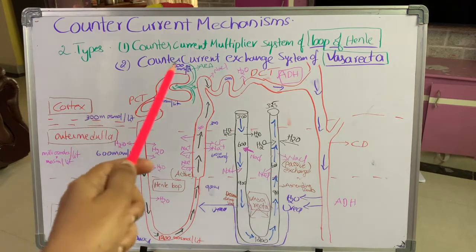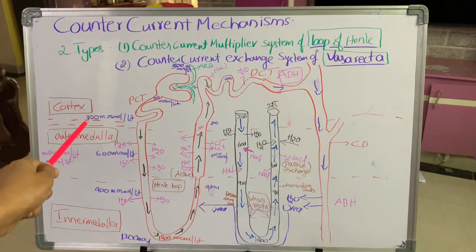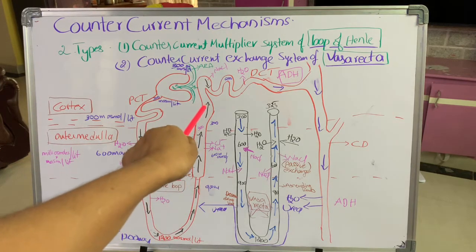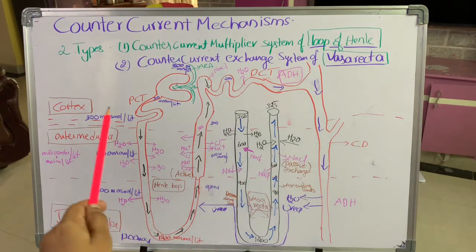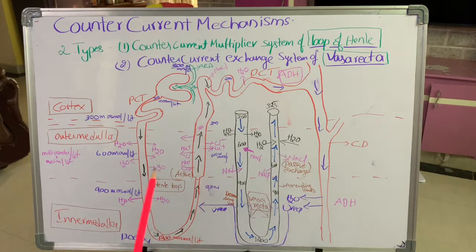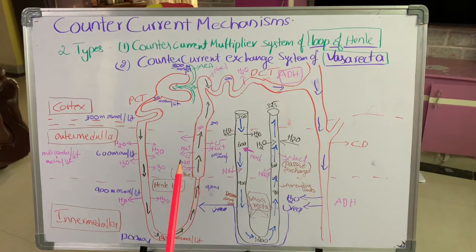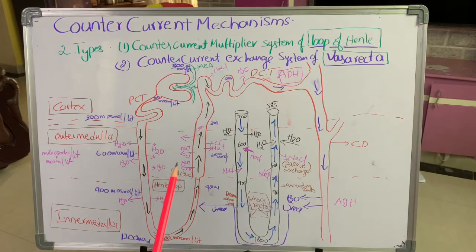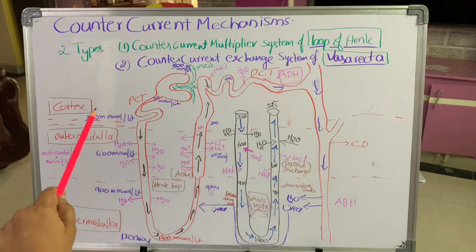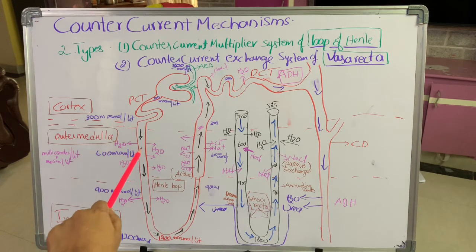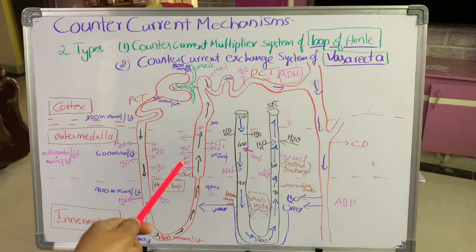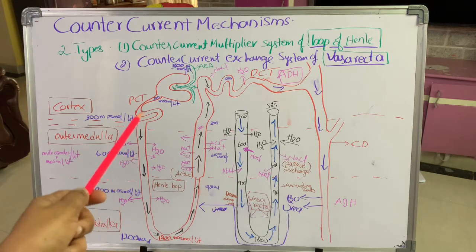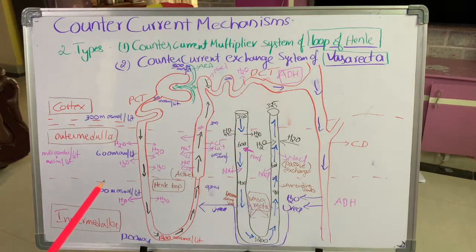That is why this is known as the counter current multiplier. 'Current' means flow — the filtrate flows downwards in the descending limb and upwards in the ascending limb, so there is opposite movement in the two limbs. Due to this, and the movement of solutes from the thick segment, osmotic pressure and osmolarity increase, drawing more water from the descending limb. It multiplies the osmolarity — that is why this is known as the counter current multiplier system of loop of Henle.